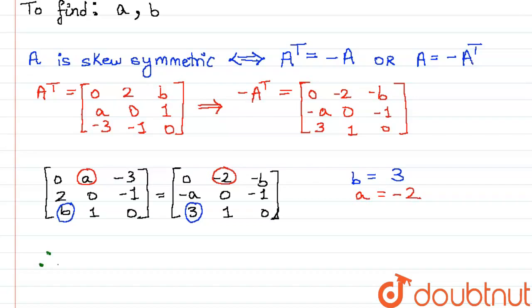Hence, we can conclude that A is equal to -2 and B is equal to 3. Thank you.